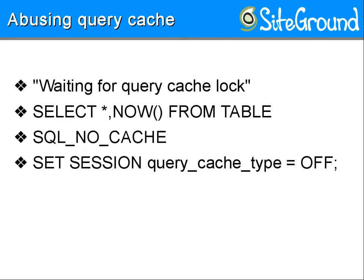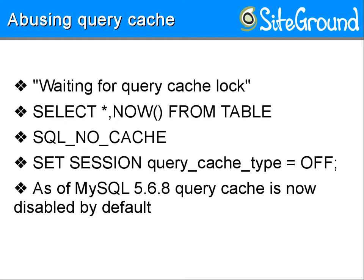Query cache is disabled as of MySQL 5.8. It's disabled because the default storage engine is InnoDB, which has its own buffer cache — the InnoDB buffer pool — and most of the time the InnoDB storage engine is faster at returning results than the query cache. That's why Oracle decided to disable query cache by default and enable it only when you actually need it.